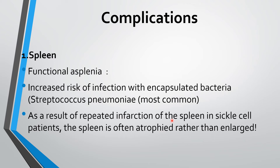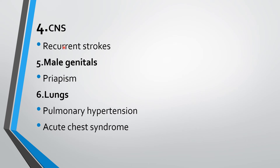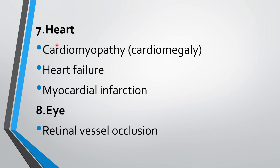In the kidney: renal papillary necrosis, glomerulonephritis, and end-stage renal failure. Skeletal complications: avascular necrosis, osteonecrosis of the femoral head, growth impairment, and osteoporosis. CNS complications: recurrent stroke. Male genital: priapism. In the lungs: pulmonary hypertension and acute chest syndrome. In the heart: cardiomyopathy, heart failure, and myocardial infarction. In the eye: retinal vessel occlusion.